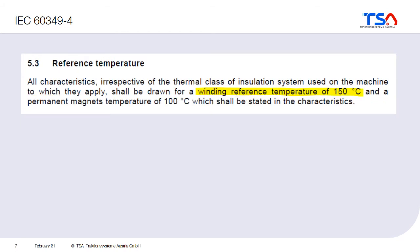Chapter 5.3 already gives us a hint about the typical temperatures for traction machines. Traction machines in the rail business are usually highly utilized, so temperatures are higher than in typical industrial applications. If you put data into a datasheet, you should use special reference temperatures — for example, for the winding you should use a reference temperature of 150 degrees Celsius, and for the permanent magnets, 100 degrees Celsius.